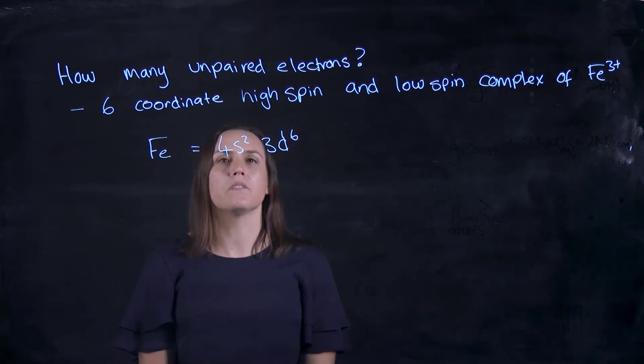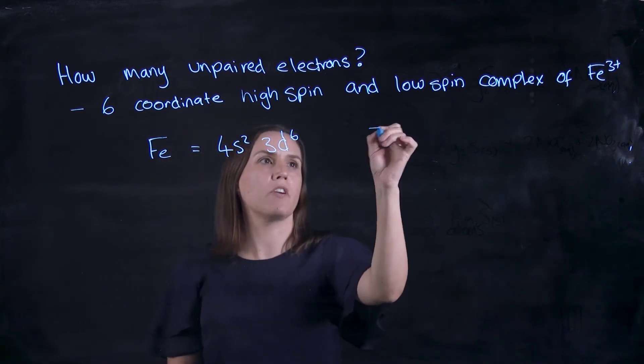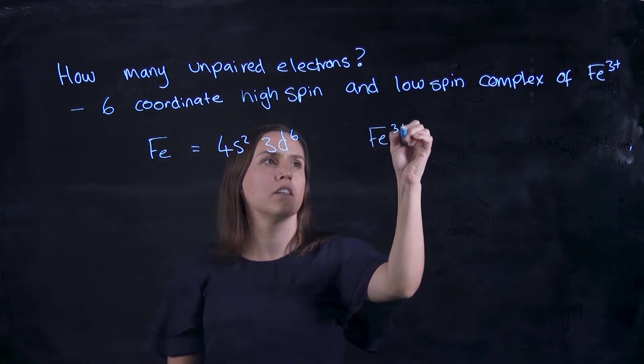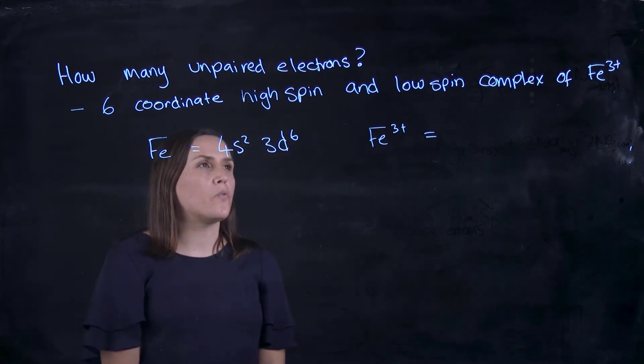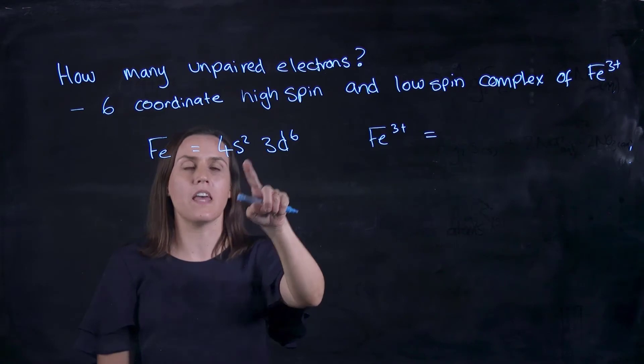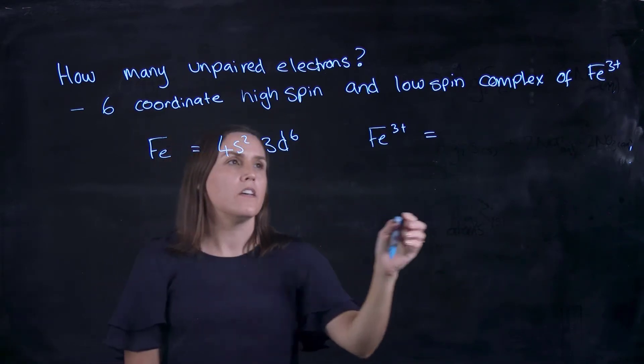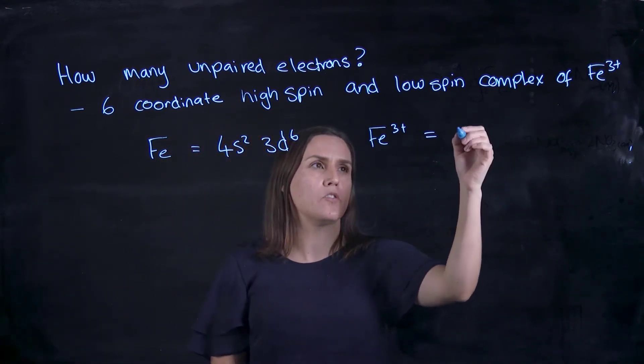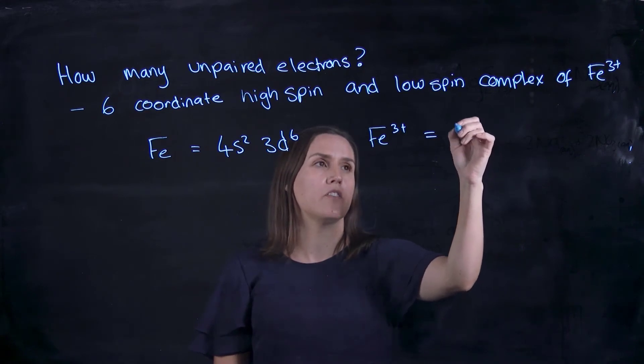Okay, so the last ones will be 4s2 and 3d6. Now if we want to have a 3+ ion, how would that change? Remember with the transition metals, we take from the s block first and then we take them from the d. So the 4s2 will disappear, we'll take those two.